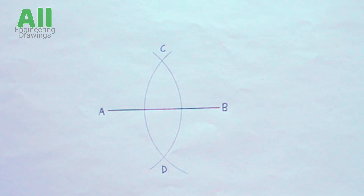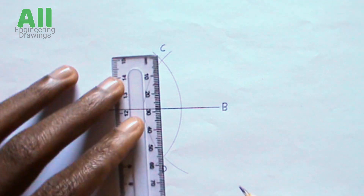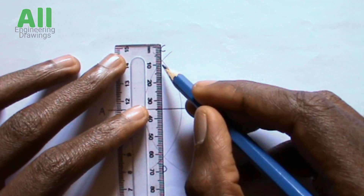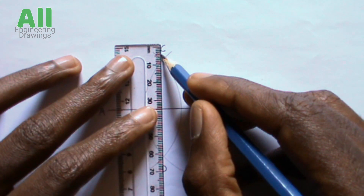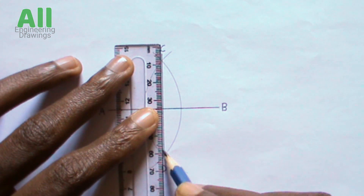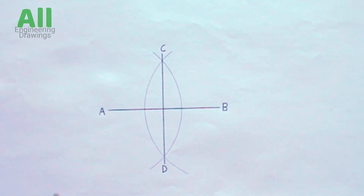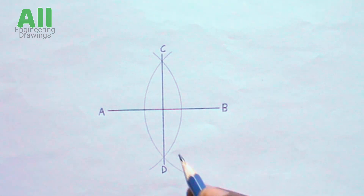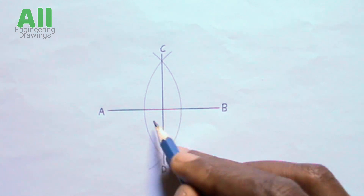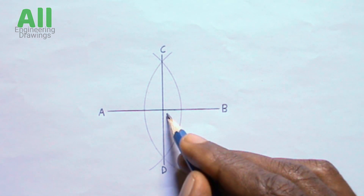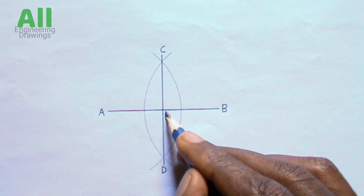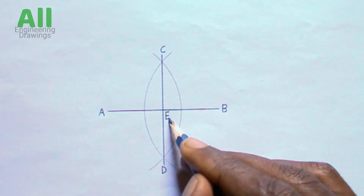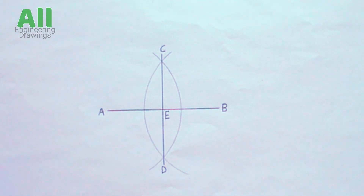Now you are to draw a line passing through the points where the arcs intersect. You can label the point where the line you just drew intersects the previous line. You can indicate the radius of your arcs.